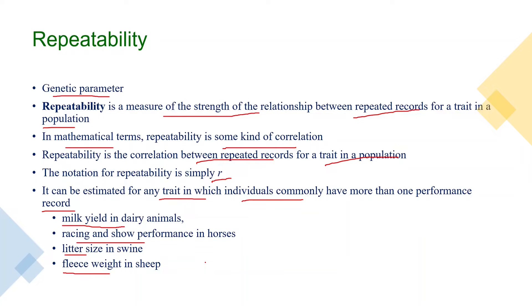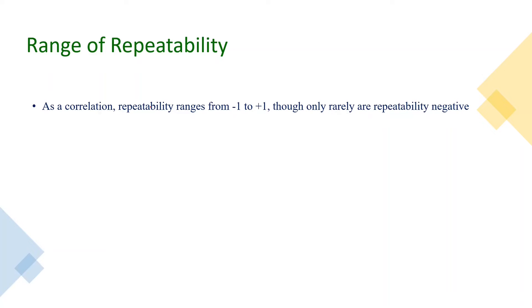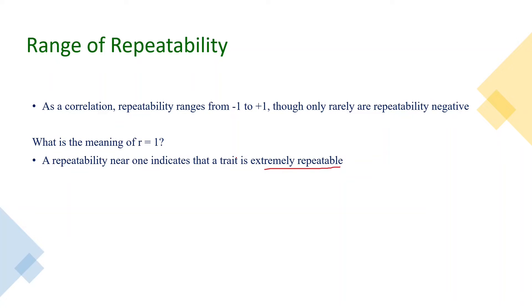As heritability ranges between 0 to 1, is there any range for repeatability? Since repeatability is a type of correlation, it can range from negative 1 to positive 1. However, in most cases repeatability lies between 0 and 1, and negative values are very rare. If you get a repeatability value of 1, it means the trait is extremely repeatable.